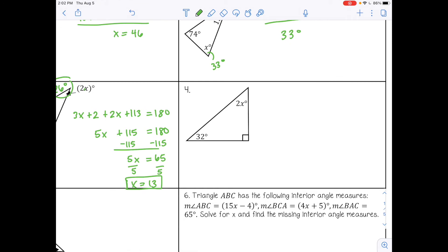Number 4. So 2X plus, remember this is 90 degrees, a right angle, plus 32 equals 180. I'm going to combine like terms. So 90 plus 32 is 122. Subtract on both sides. And then divide by 2. So X equals 29. And then I'm just going to substitute that in. So 2 times 29 is 58 degrees.